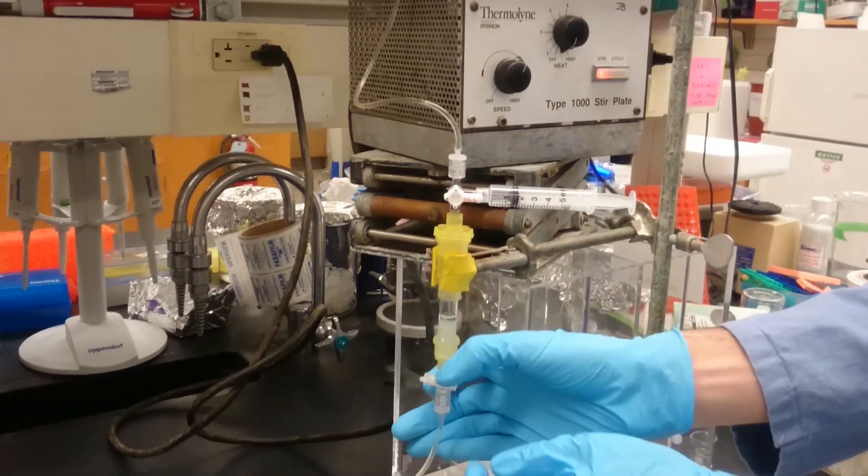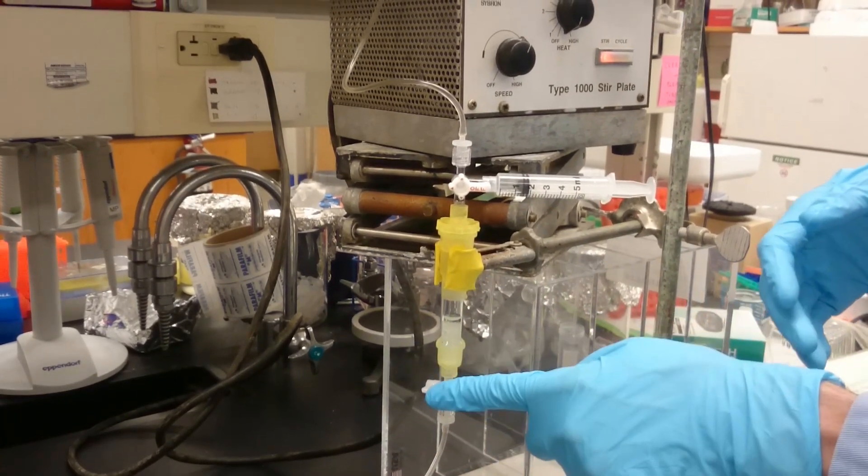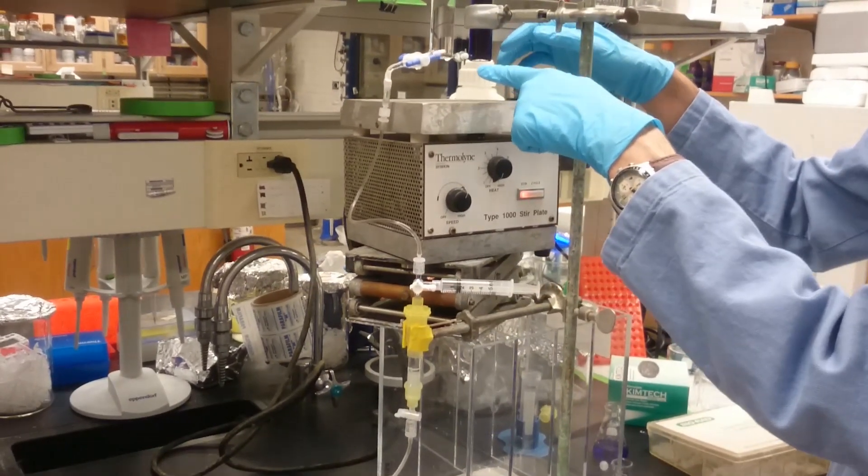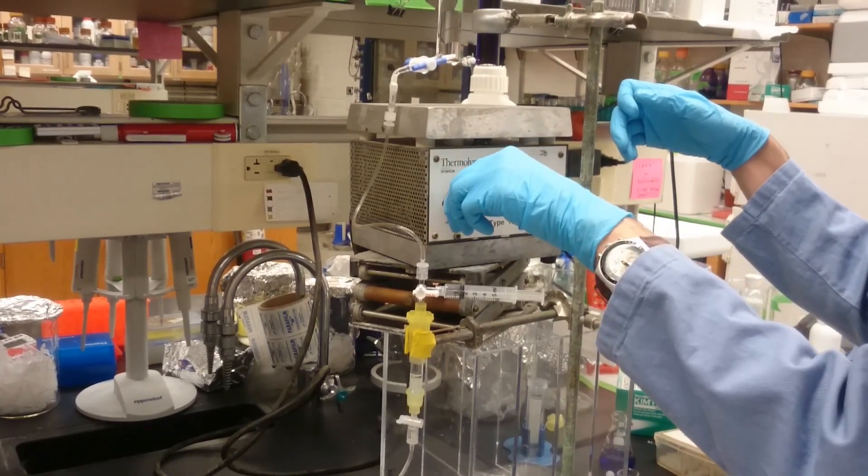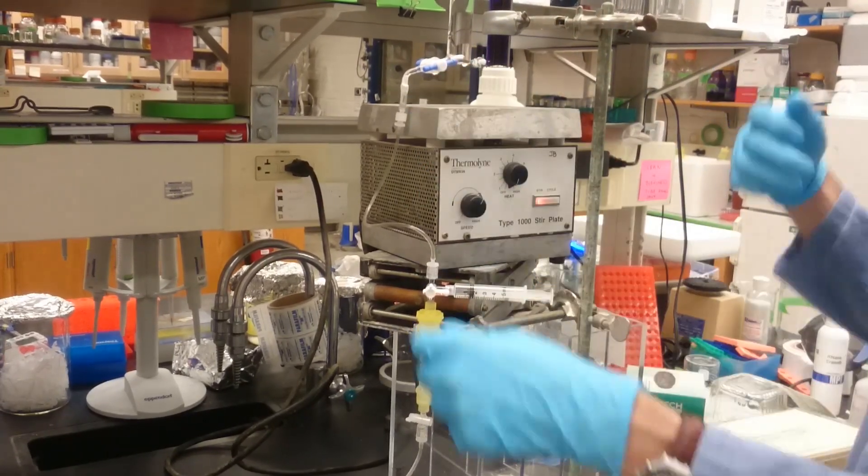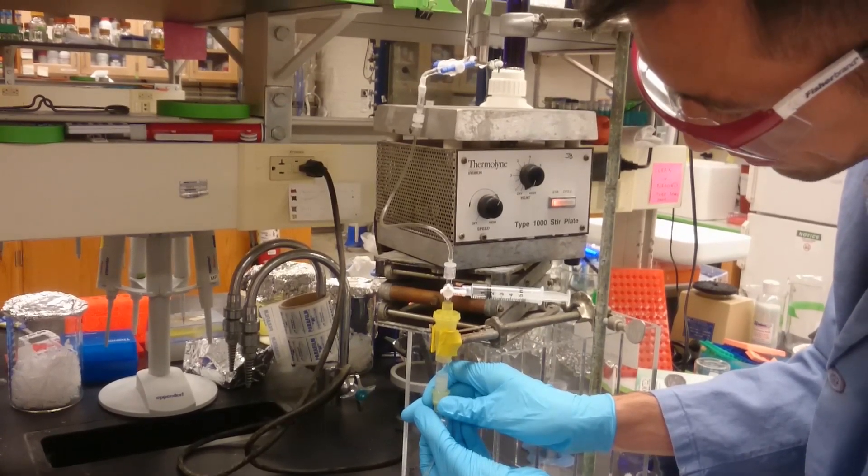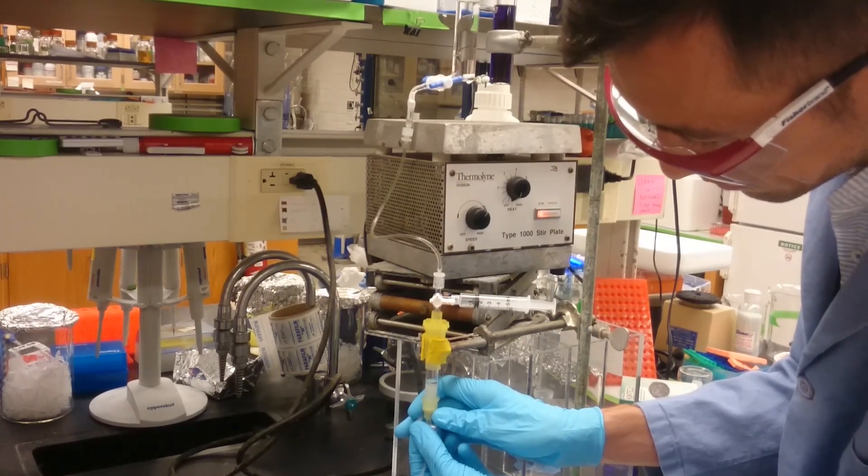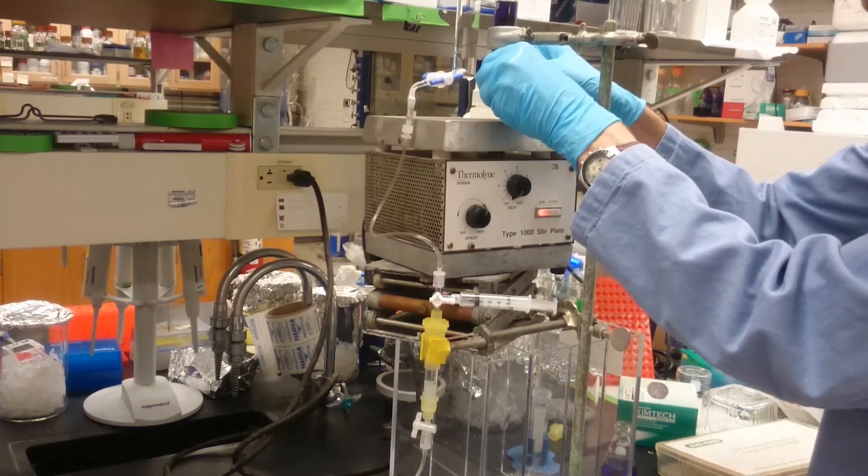And now I'm going to go ahead and open up the stopcock on the column so that the whole thing will begin to run. And when I do that, I'm going to open the small connection here between the two chambers to actually start the gradient running. Hopefully this thing will be spinning fast enough that it'll mix by the time that it runs over here. So I'm going to go ahead and open up this one, and I'm going to open this one.